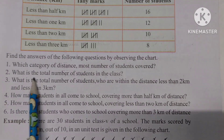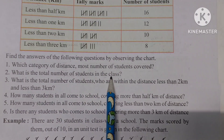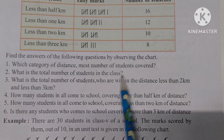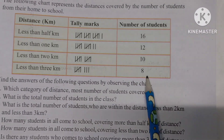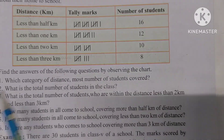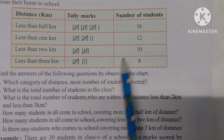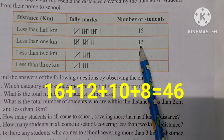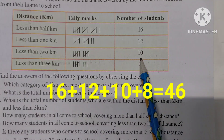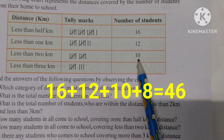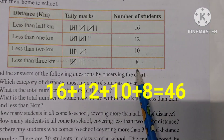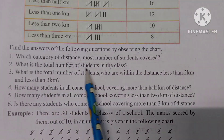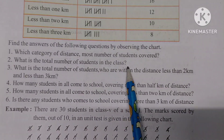What is the total number of students in the class? The total number of students in the class is 40.